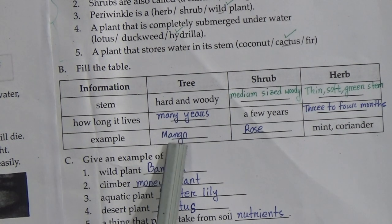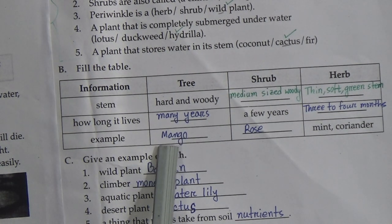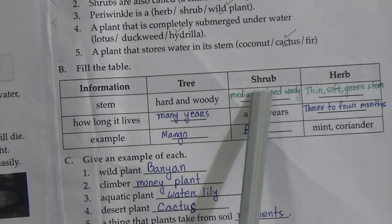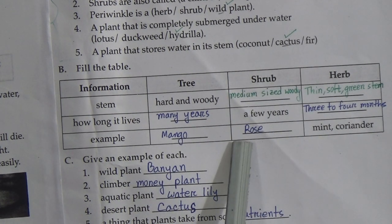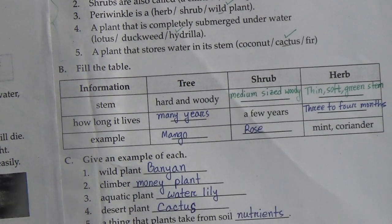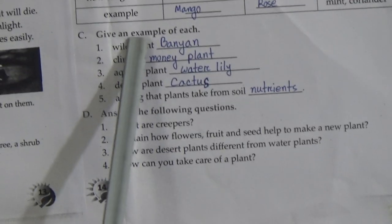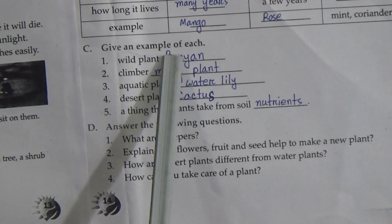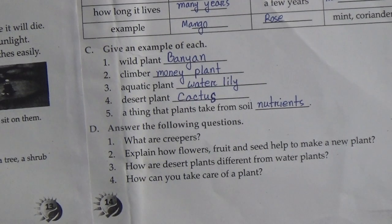An example of a tree is mango. An example of a shrub is rose. Now, exercise C — give an example of each.